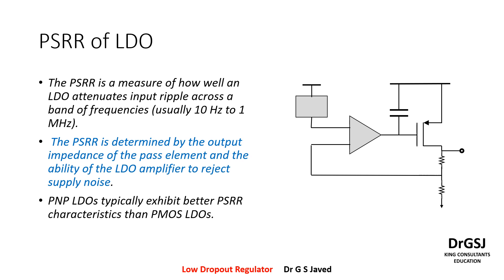PSRR, or Power Supply Rejection Ratio, is a measure of how well an LDO attenuates input ripple across a band of frequencies. If there is a small ripple placed on the power supply, the ability of the loop or the LDO to reduce this ripple to extremely small values on the output is called the Power Supply's ability to reject. That is the rejection ratio.